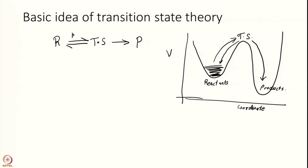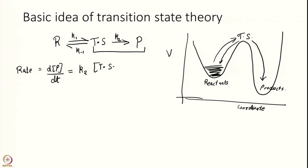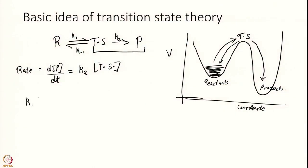Let us think about this model. I have k1 here, k-1 here, and some k2 here, and all these steps are assumed to be elementary. If I want to find the rate, rate is d[P]/dt. Looking at the elementary step of transition state going to product, d[P]/dt equals k2 times the concentration of transition state. The next assumption is that reactant and transition state are at thermal equilibrium.